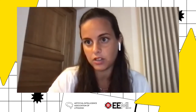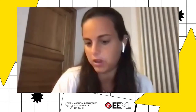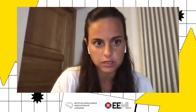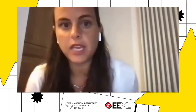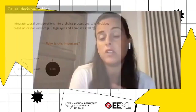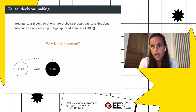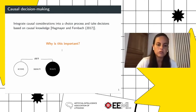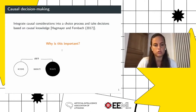I believe this topic is very much related to things you've seen in the rest of the workshop, but feel free to interrupt me if there are aspects of the basics I'm not covering. So what do I mean by causal decision making? I refer more generally to the idea of integrating causal considerations into a choice process and taking decisions based on causal knowledge. This allows you to reason about the effects of actions you might take in an environment and how these will produce certain results.